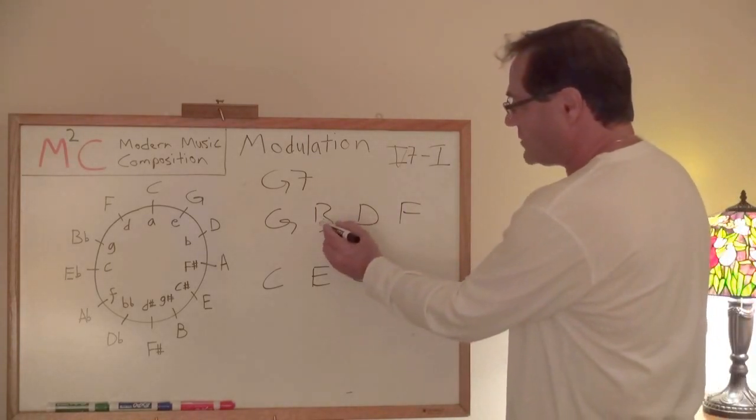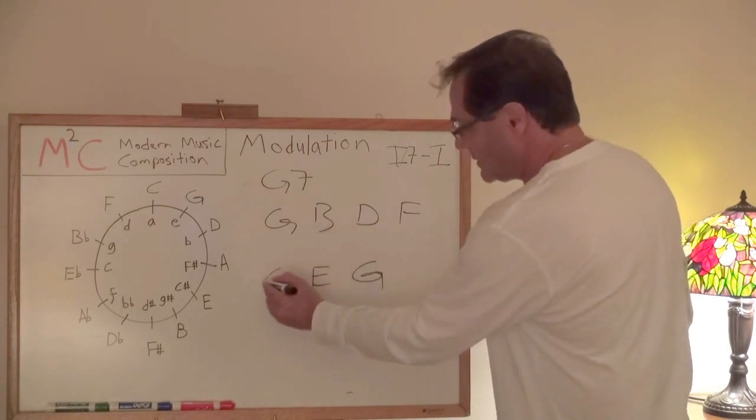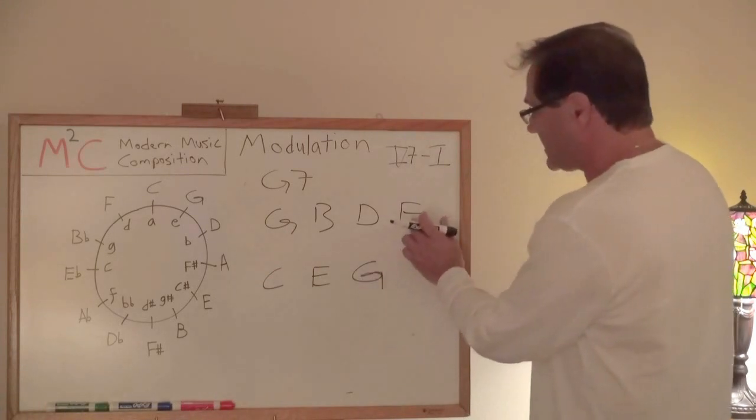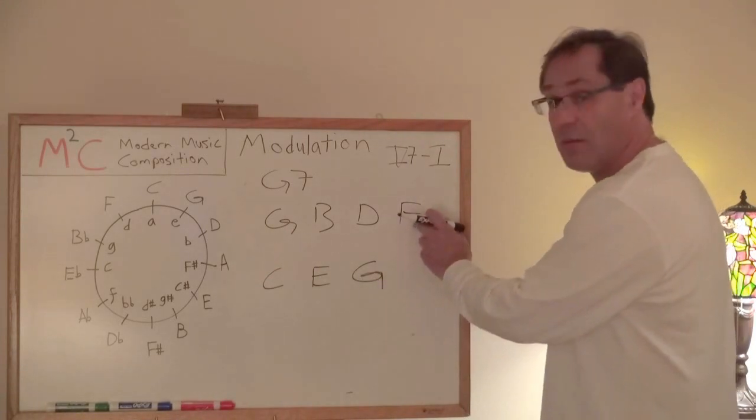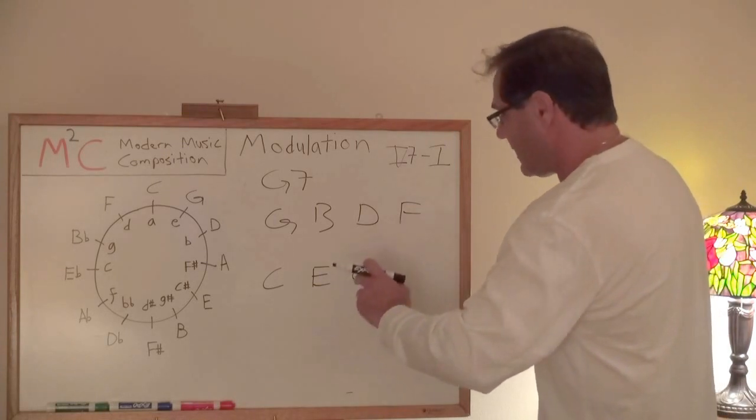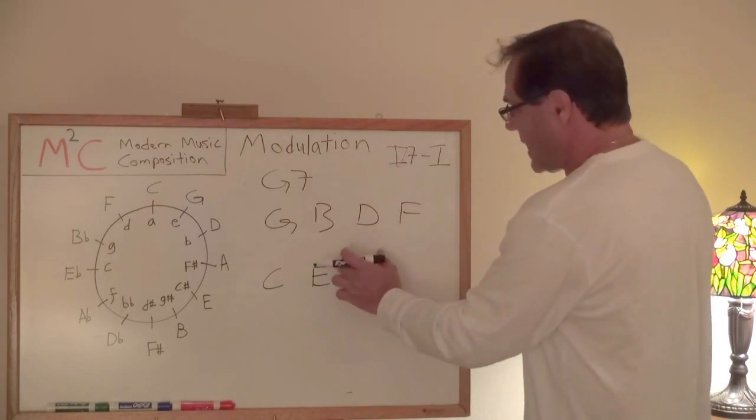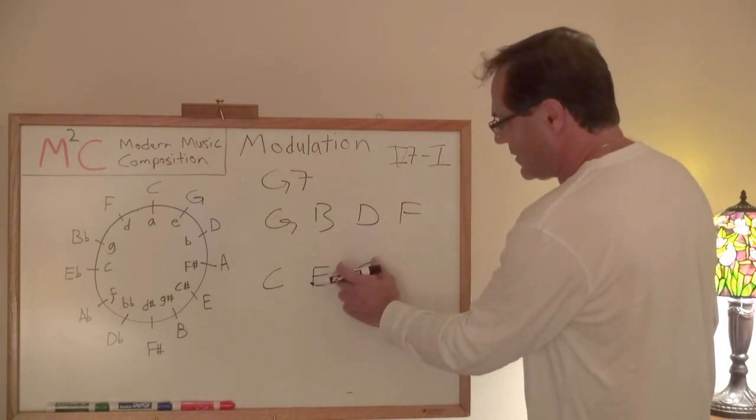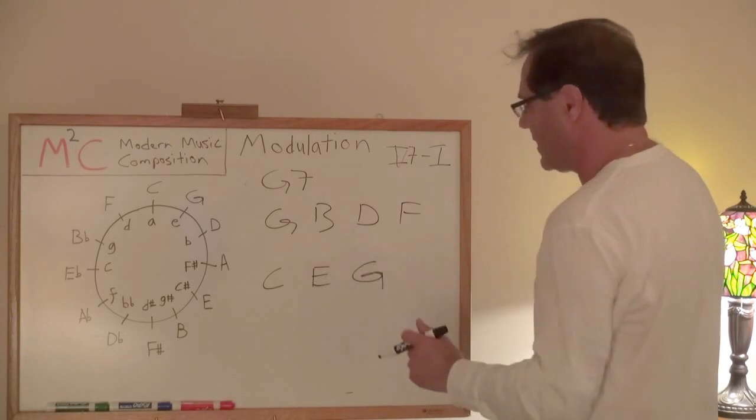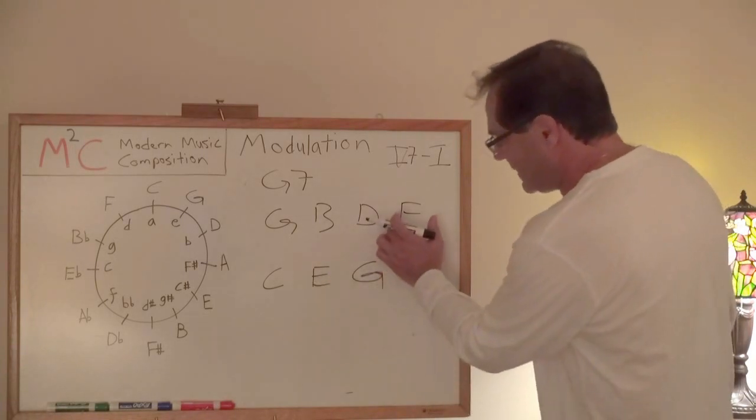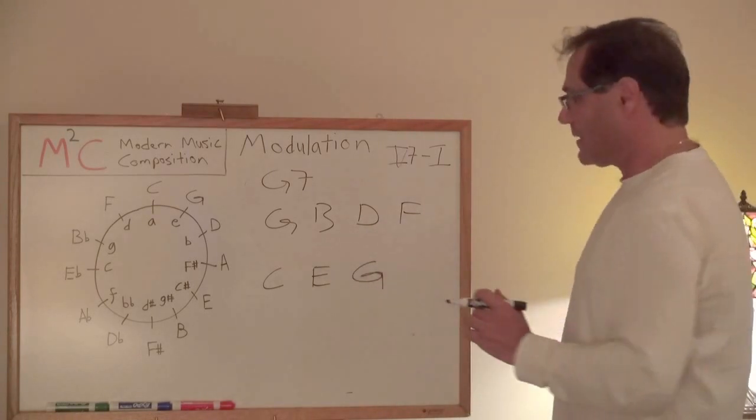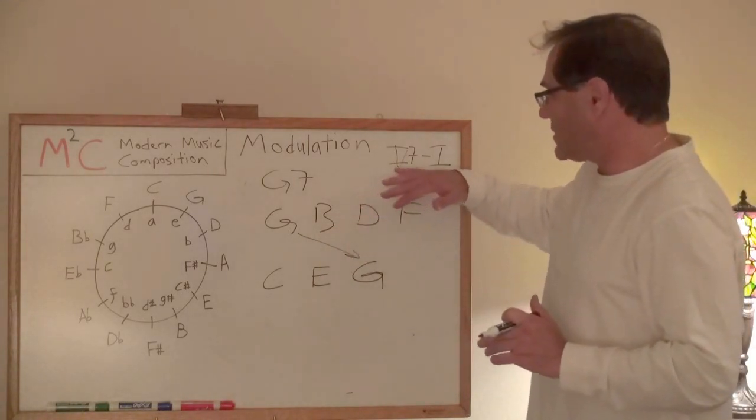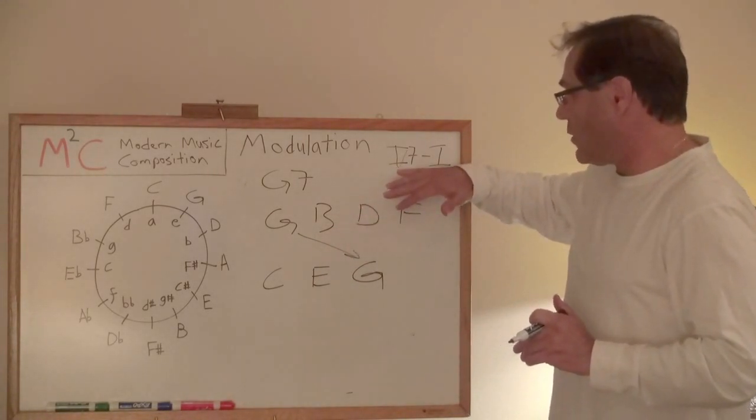The third of our G7 acts as a leading tone to the tonic. So that is a nice movement into the tonic. You'll see that the seventh of our dominant seventh chord acts as a frontal leading tone to the third of our tonic. And so it leads extremely well into E. And so obviously G is G.